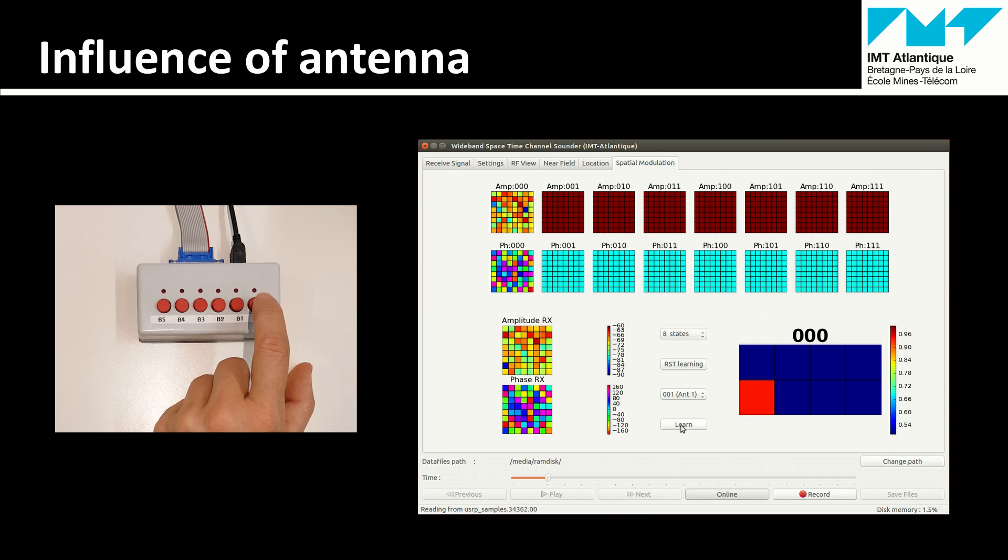We can learn the second antenna and you can see that you have a good correlation on the second symbol. If I release and go back to the first antenna, we have a good correlation on the first symbol.